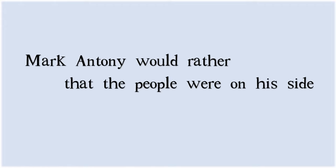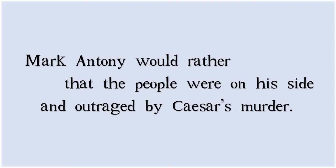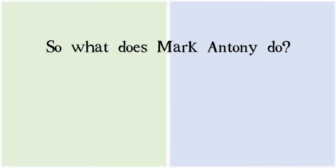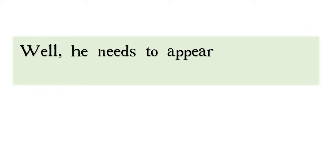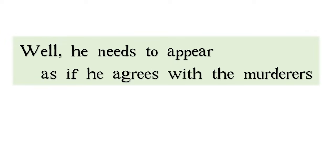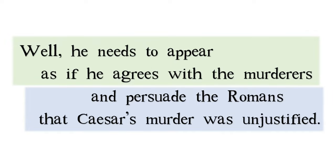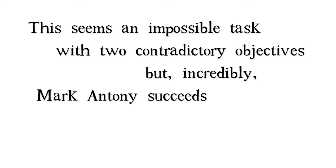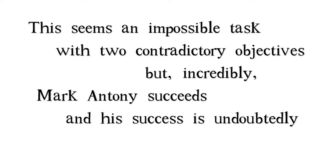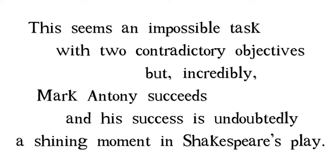Mark Antony would rather that the people were on his side and outraged by Caesar's murder. So what does he do? He needs to appear as if he agrees with the murderers and persuade the Romans that Caesar's murder was unjustified. This seems an impossible task with two contradictory objectives, but incredibly, Mark Antony succeeds — and his success is undoubtedly a shining moment in Shakespeare's play.